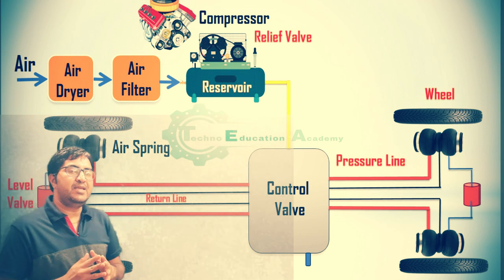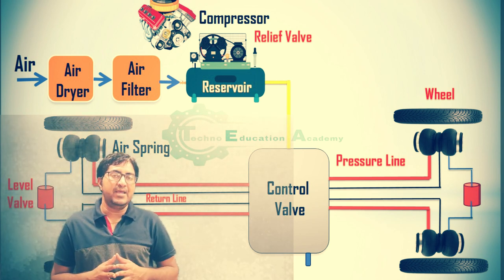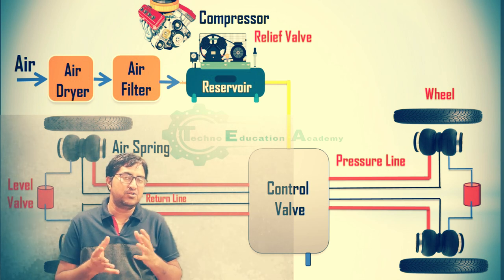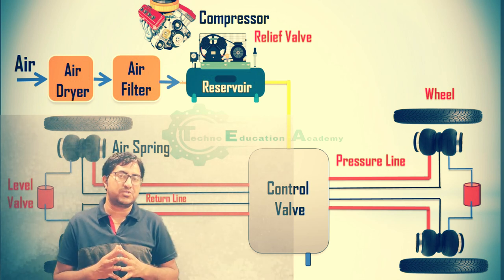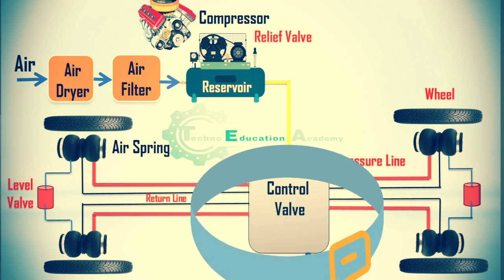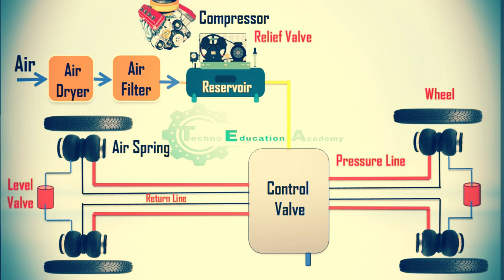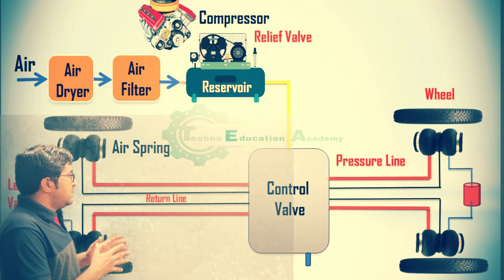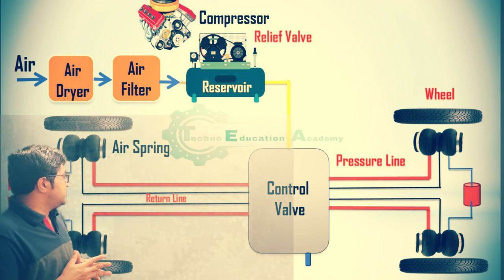It provides good driving quality, increases vehicle life, and absorbs the maximum amount of shock. The pressure inside the air spring increases, is released through the return line, and through the control valve, this high-pressure air is released into the atmosphere. This is the working principle of the air suspension system.